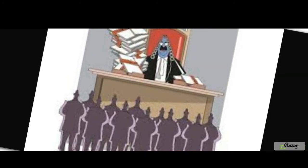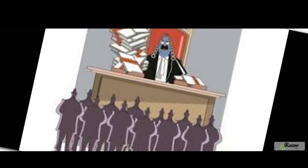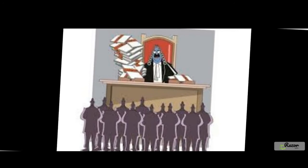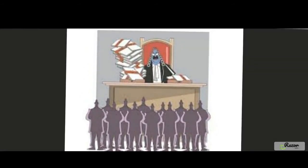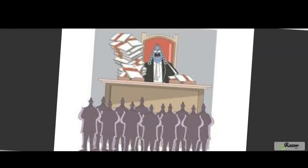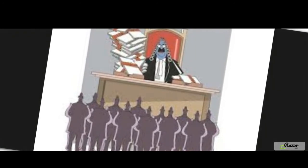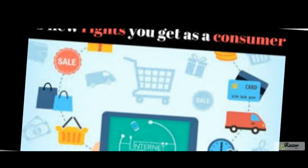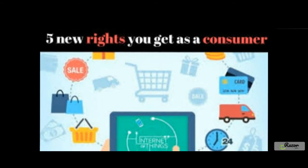Other remedies include an order for removal of deficiency in service if feasible, and an order for discontinuance of unfair or restrictive trade practices in cases where the cause of action was such a practice. The authority is also empowered to impose a complete or conditional ban on practices that may be unfair or restrictive in nature, as well as payment of adequate cost or the cost of litigation if claimed by the complainant.